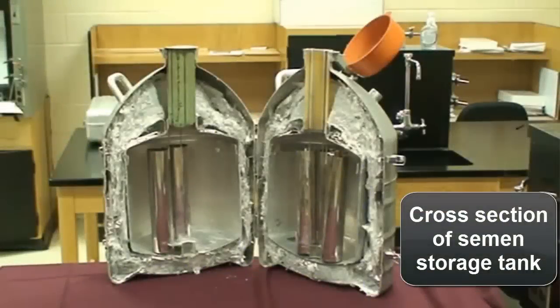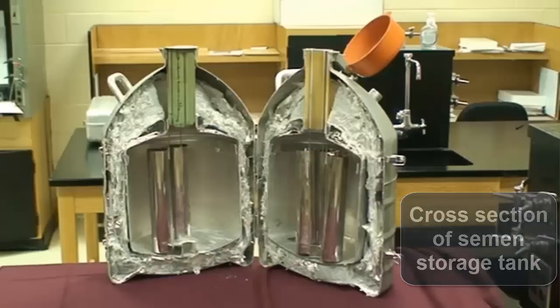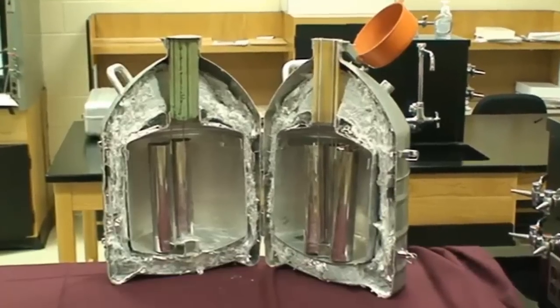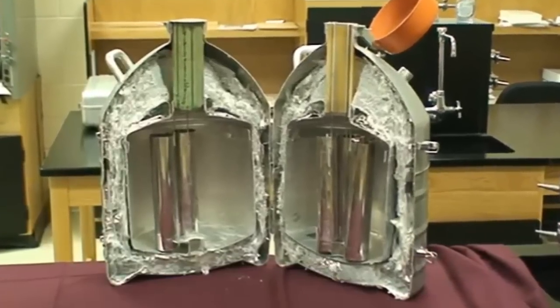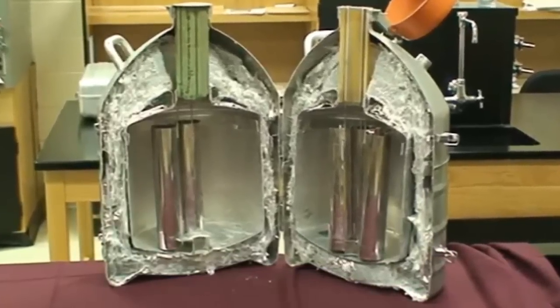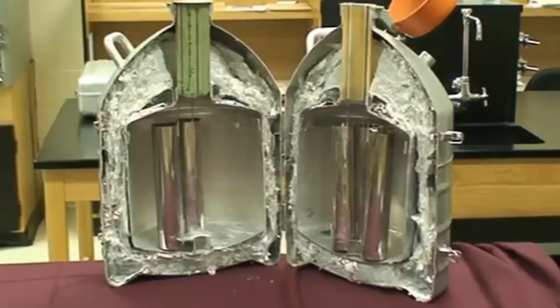Semen storage tanks are large vacuum sealed metal bottles. They're extremely well insulated. These tanks can maintain internal temperatures of negative 320 degrees Fahrenheit as long as they contain at least 2 inches of liquid nitrogen.